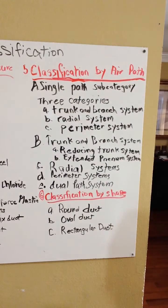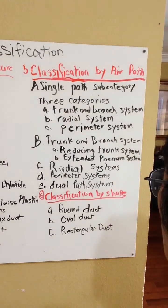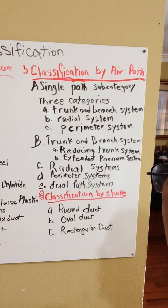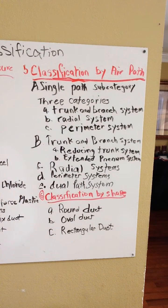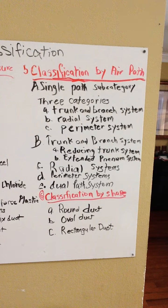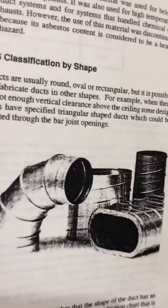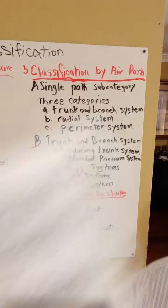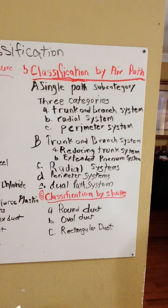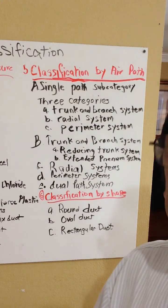The last classification is by shape. Ducts can be rectangular, round, or oval in shape. As shown in the pictures, you can see the oval shape, rectangular shape, and round shape. That covers Chapter One of our duct system classification.